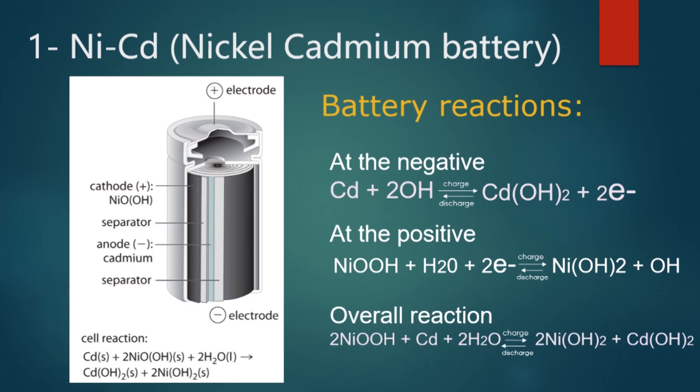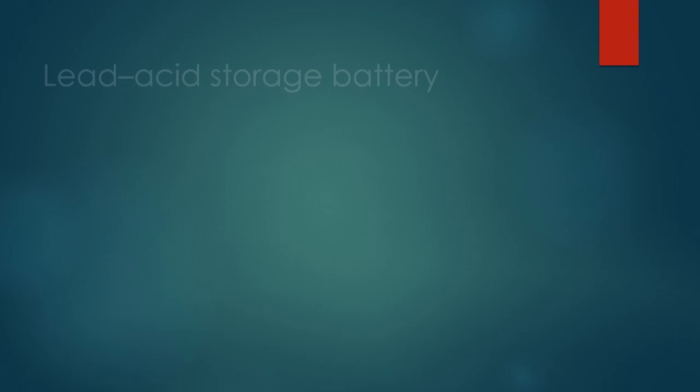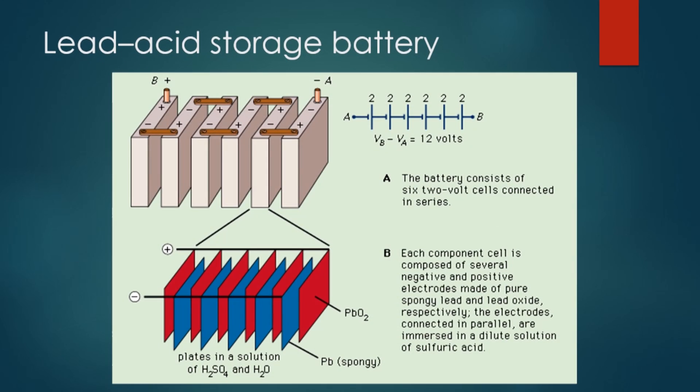We are moving into our second example, which is lead storage battery. The battery is composed of six cells in series to give an overall 12 volts supply. In the discharging state, both the positive and negative plates become lead sulfate. The electrolyte loses much of its dissolved sulfuric acid and becomes primarily water.